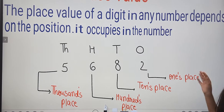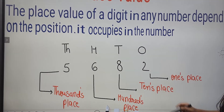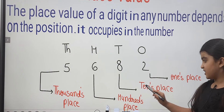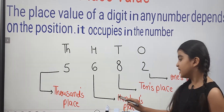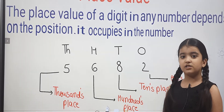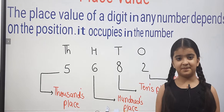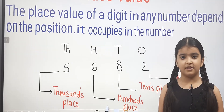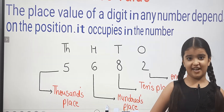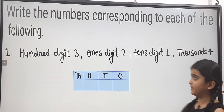The most right number is Ones Place, then Tens Place, then Hundreds Place. The most large number is Thousands Place. This way we need to know the place. Let's have some problems.